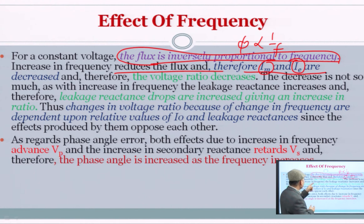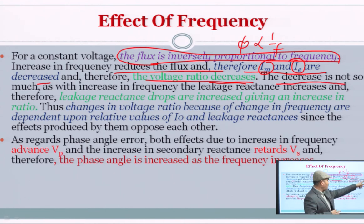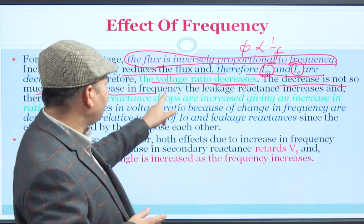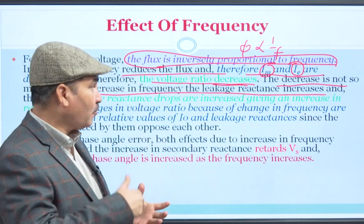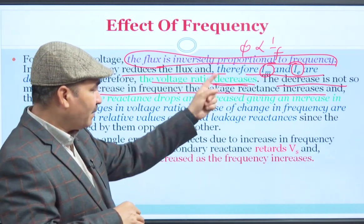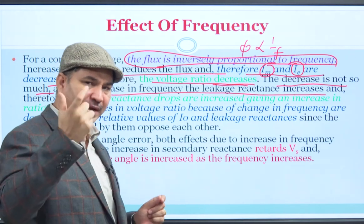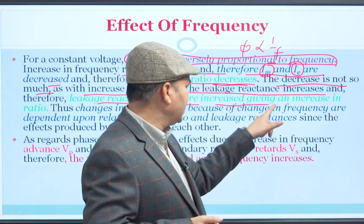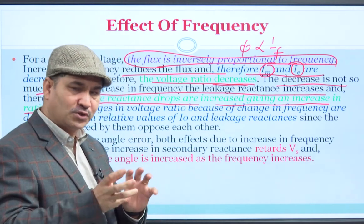However, the voltage ratio decreases when IM and IE decrease, which is desirable — errors are reducing. But at the same time, with increase in frequency, the leakage reactance also increases because the omega factor increases, so leakage reactance drops increase, leading to an increase in ratio error. So on one side, the ratio error is decreasing (due to reduced IM, IE), and on the other side, leakage reactance is increasing it — they neutralize each other.